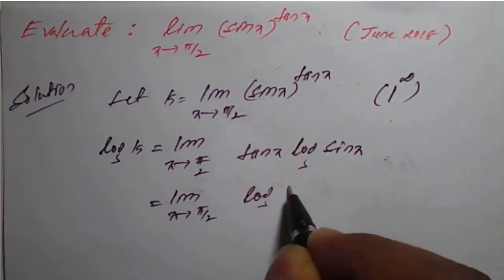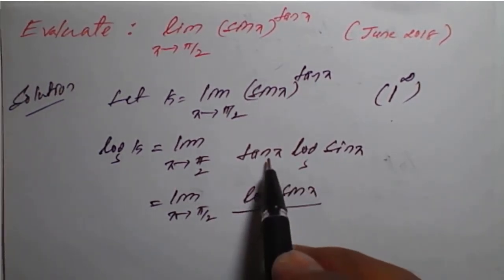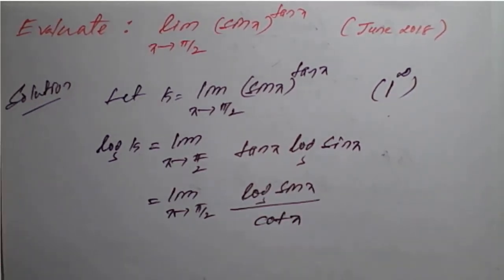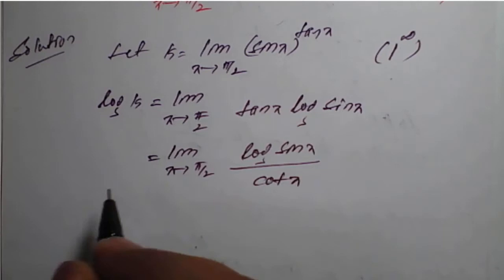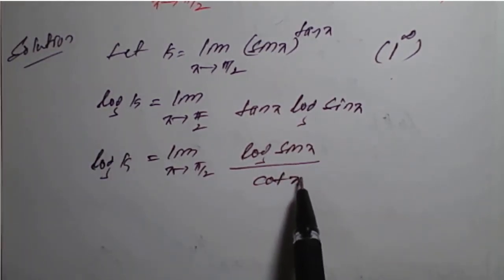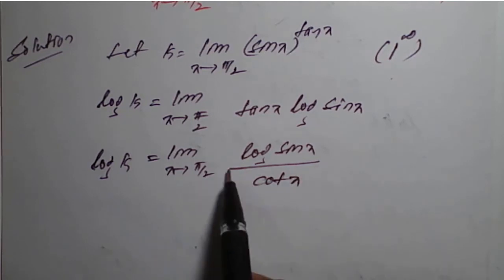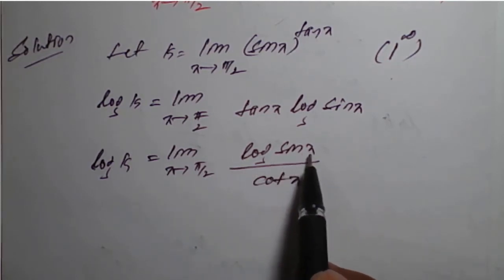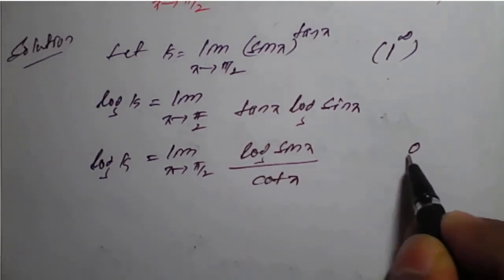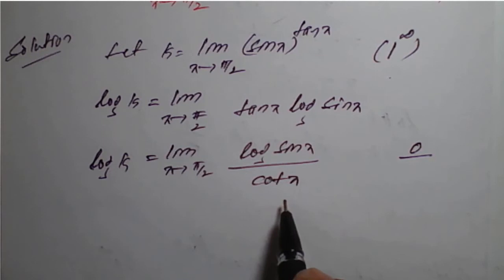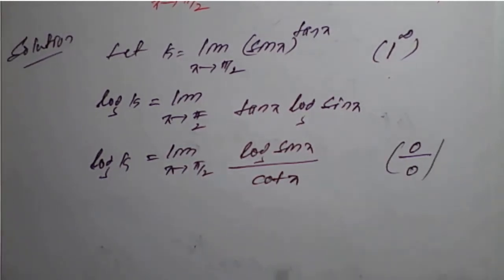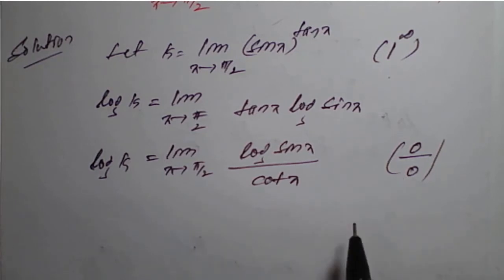This can be rewritten as log(sin(x)) divided by cot(x), since the reciprocal of tan is cot. So log(k) equals this limit. If we apply x = π/2 again: sin(π/2) is 1, so log(1) is 0, and cot(π/2) is also 0. This gives us a 0/0 form.